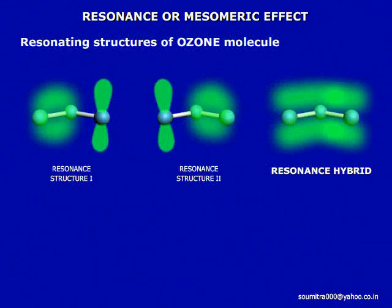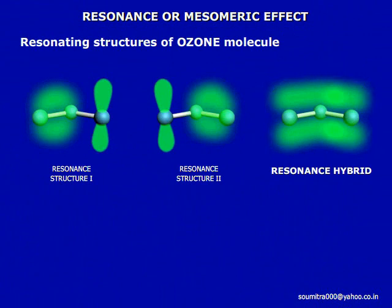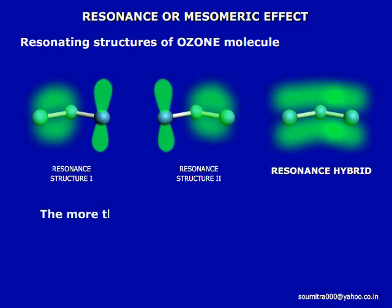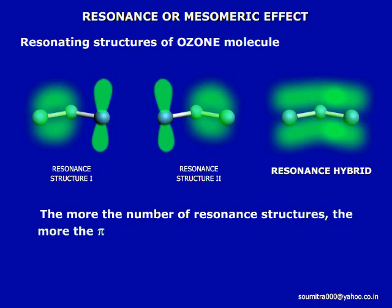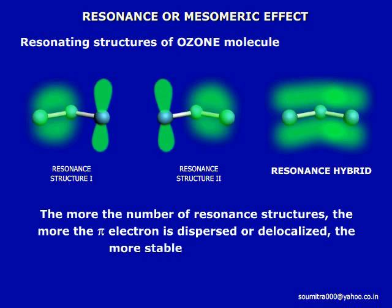The electron charge is maximally dispersed in the resonance hybrid structure. Therefore, it is the most stable and of lowest energy. The more the number of resonance structures, the more the pi electron is dispersed or delocalized, and the more stable is the molecule.